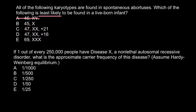Answer B is the 45 X karyotype. This would phenotypically be female, but missing one X chromosome, since females normally have two X chromosomes. This individual would still be a live-born infant because it is relatively easy to tolerate — when a female has two X chromosomes, one is turned off and forms a Barr body.